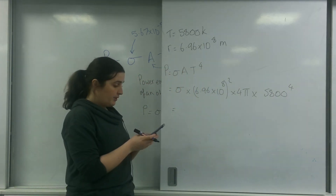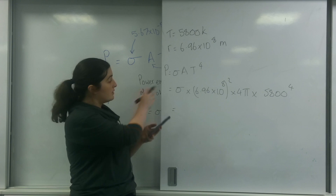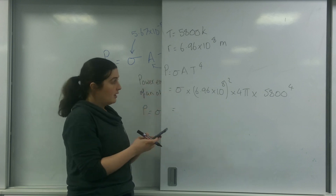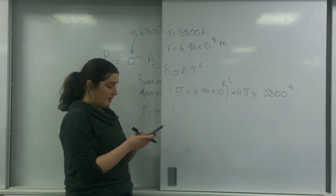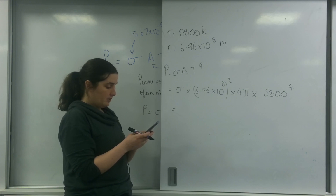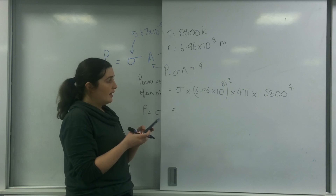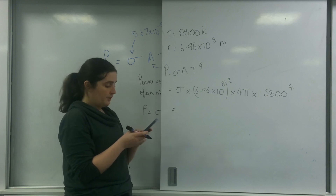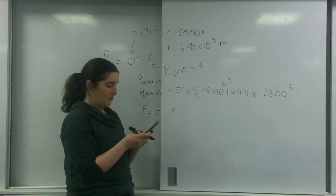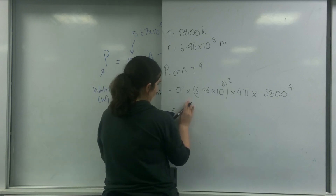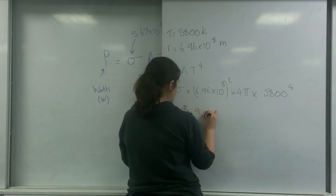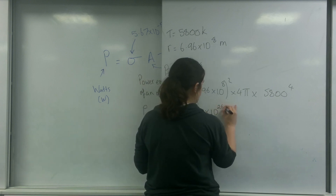So that's 5.67 times 10 to the minus 8, which is the Stefan constant, times by 4π times by 6.96 times 10 to the 8 squared, and then times by 5,800 to the power of 4. And I get an answer of 3.9 times 10 to the 26 watts.